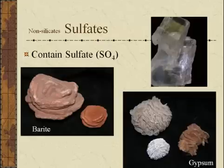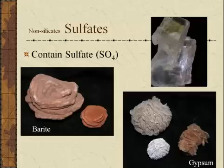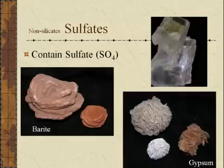The non-silicate sulfate group contains sulfur with four oxygen atoms. Something like the desert rose barite is a barium sulfate. Gypsum, or selenite — a special variety of gypsum — is a calcium sulfate. This is a very common mineral. In fact, you have tons of it in your home. Sheet rock, or drywall — the wallboard and plaster in your house — is made out of gypsum.